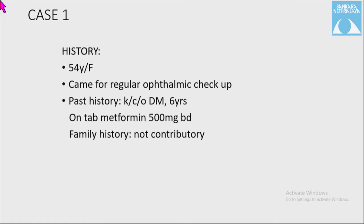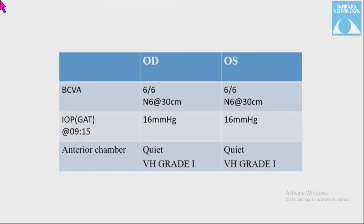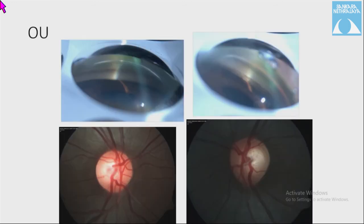Case 1: A 54-year-old female presenting for a regular ophthalmic checkup with a past history of diabetes mellitus for six years, on tablet metformin 500 mg BD. BCVA was 6/6 N6 in both eyes; IOP by Goldmann applanation tonometry was 16 mmHg in both eyes; anterior chamber was quiet with Van Herick grade 1 in both eyes. Gonioscopy revealed occludable angles. Laser iridotomy was planned as she is a known diabetic requiring repeated dilation for posterior segment examination.